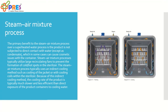Let's understand the steam air mixture or SAM process. The primary benefit of the steam air mixture process over a superheated water process is that the product is not subjected to direct contact with water, except for condensation, which in some cases can cause cosmetic issues with the containers. The SAM process typically utilizes a large recirculation fan to prevent the formation of cold or hot spots within the chamber. SAM typically uses an indirect cooling method such as cooling of the jacket or cooling coils within the sterilizer, because direct cooling is typically much slower and less efficient than direct exposure of the product container to cooling water. Remember, the cooling time can be extended for your product here.